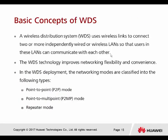A wireless distribution system, or WDS for short, uses a wireless link to connect two or more independently wired or wireless LANs so that users in these LANs can communicate with each other. They form a wireless bridge to hook up these two wireless devices together without using any LAN cable. The wireless technology improves networking flexibility and convenience. In WDS, the networking modes are classified into three types: point-to-point, point-to-multipoint, and repeater mode.